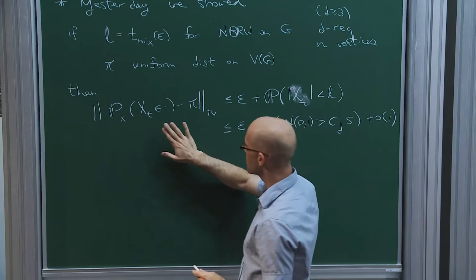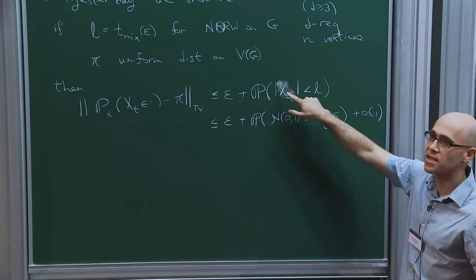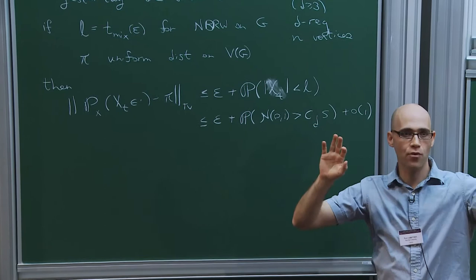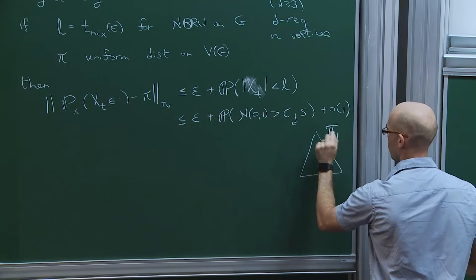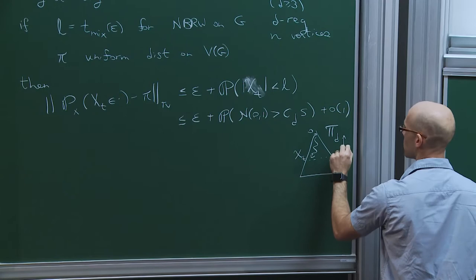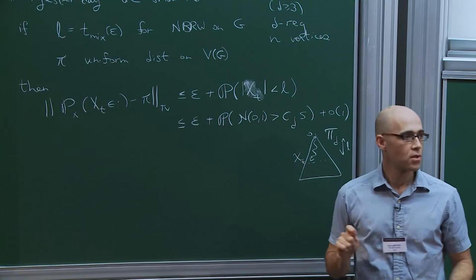If you choose this l and π is your uniform distribution on the vertices, then the distance from the stationary distribution in total variation is at most the probability that the walk on the tree — the analog of the random walk but on the cover tree, the infinite d-regular tree — started at o, either did not make it to height l, or it did make it to height l, and then you just pay the mixing time of the corresponding non-backtracking random walk on G.